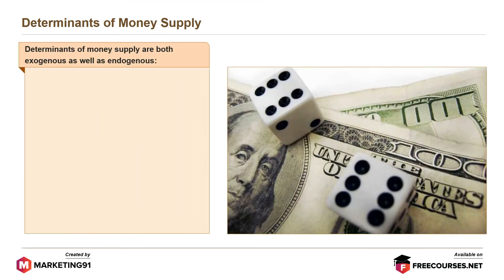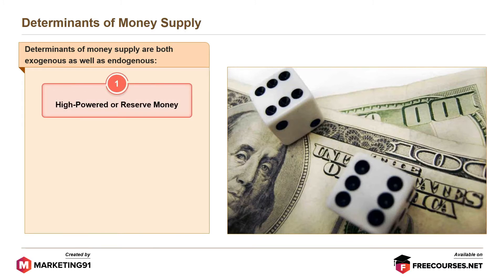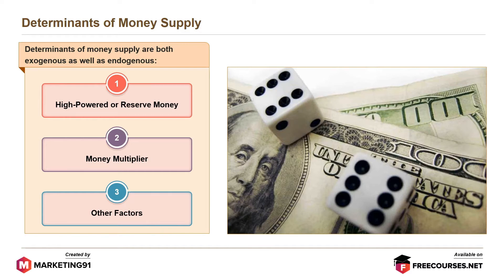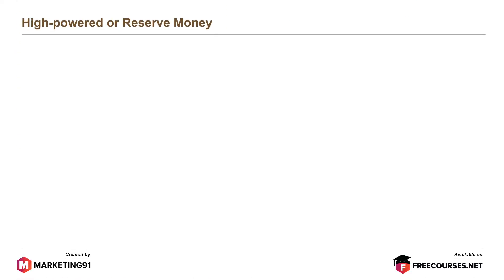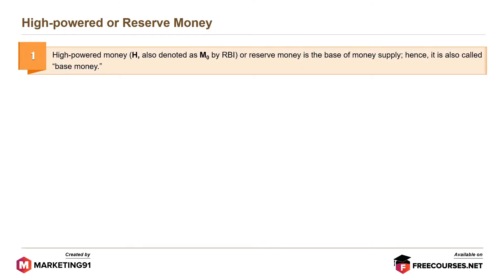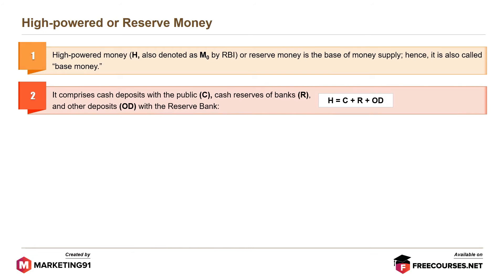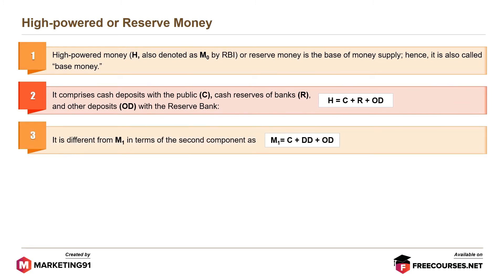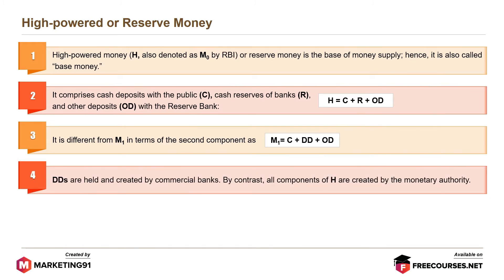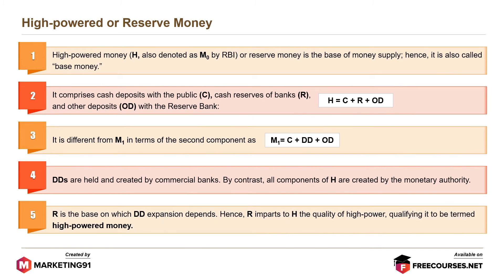Determinants of money supply are both exogenous as well as endogenous: high powered or reserve money, money multiplier, and other factors. High powered money H, also denoted as M0 by RBI or reserve money, is the base of money supply, hence it is also called base money. It comprises cash deposits with the public C, cash reserves of banks R, and other deposits OD with the reserve bank; that is, H equals C plus R plus OD. It is different from M1 in that M1 equals C plus DD plus OD, where DDs are held and created by commercial banks. All components of H are created by the monetary authority. R is the base on which DD expansion depends, hence R imparts to H the quality of high power, qualifying it to be termed high powered money.